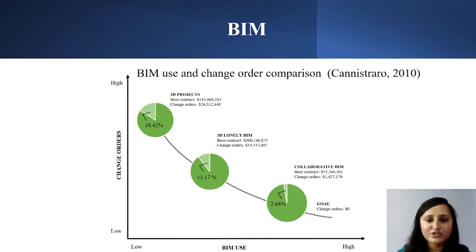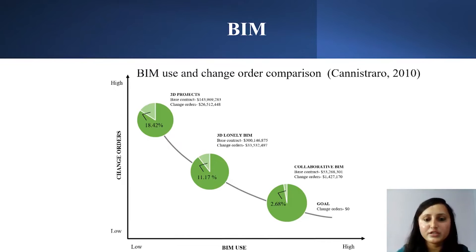As BIM helps in cost saving, to quantify this, a researcher examined around 400 projects completed between 2003 and 2009 with a project value of about $550 million. He separated those projects into three categories: traditional projects where BIM was not used, lonely projects where BIM was used in a silo approach with every stakeholder working on their own, and collaborative projects where BIM was used with multiple parties in collaboration with each other. He found that as the project team collaborated, cost savings became increasingly more significant. Hence, we can say that collaboration among project participants plays a vital role for using BIM.